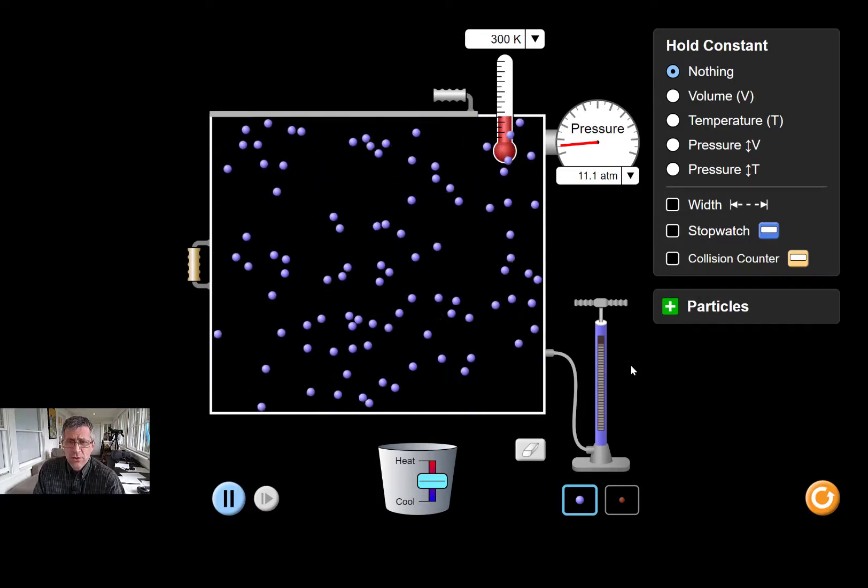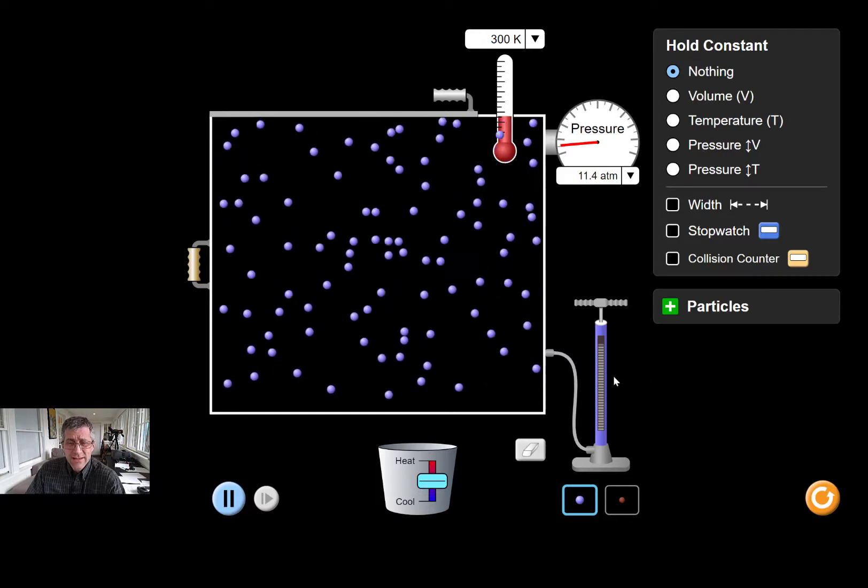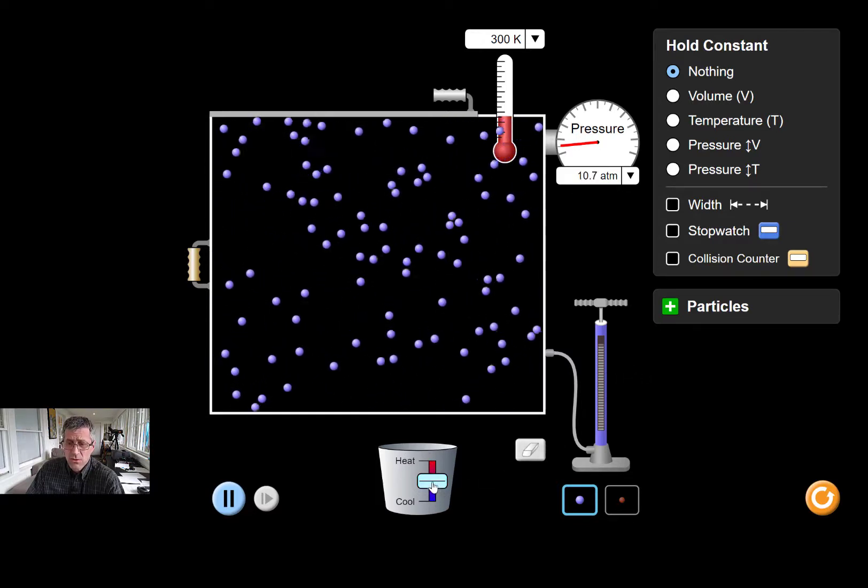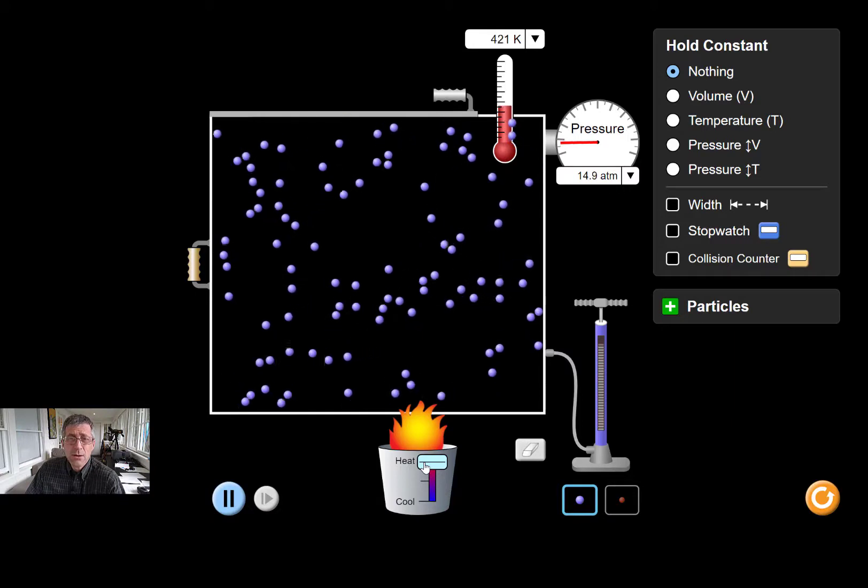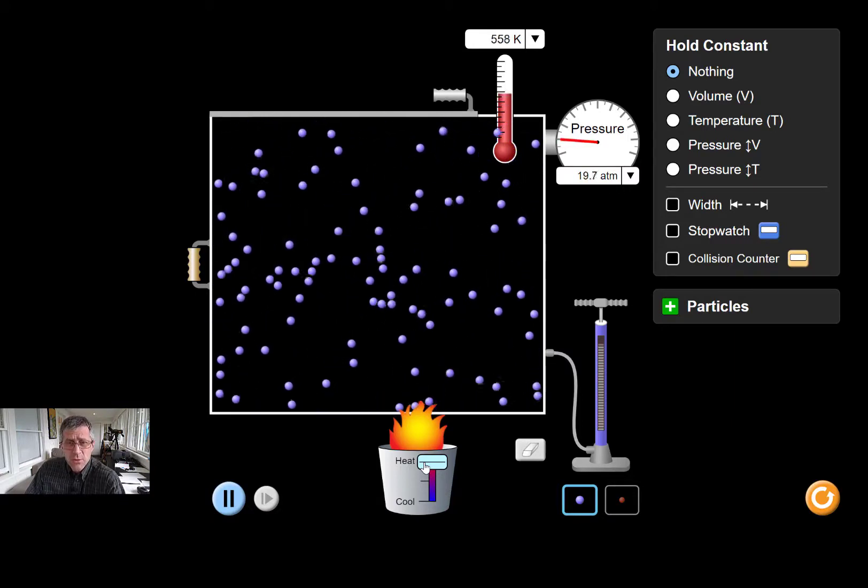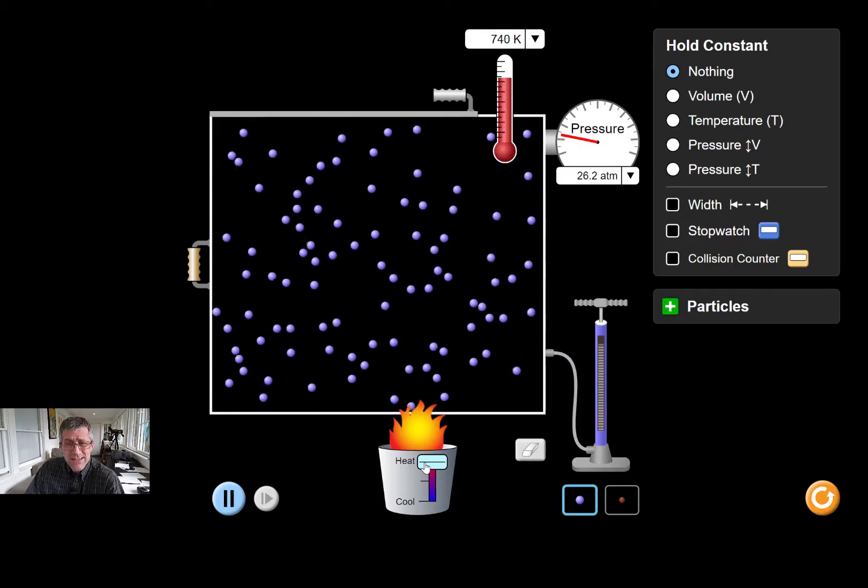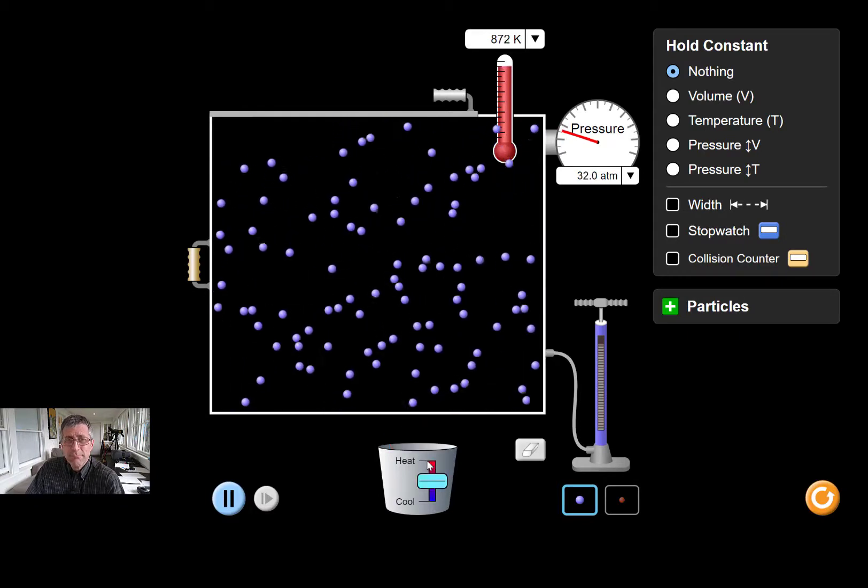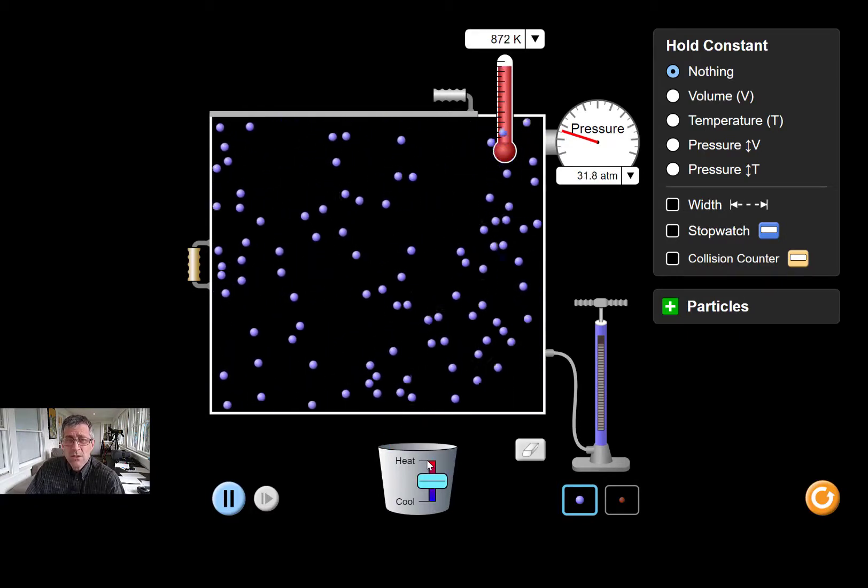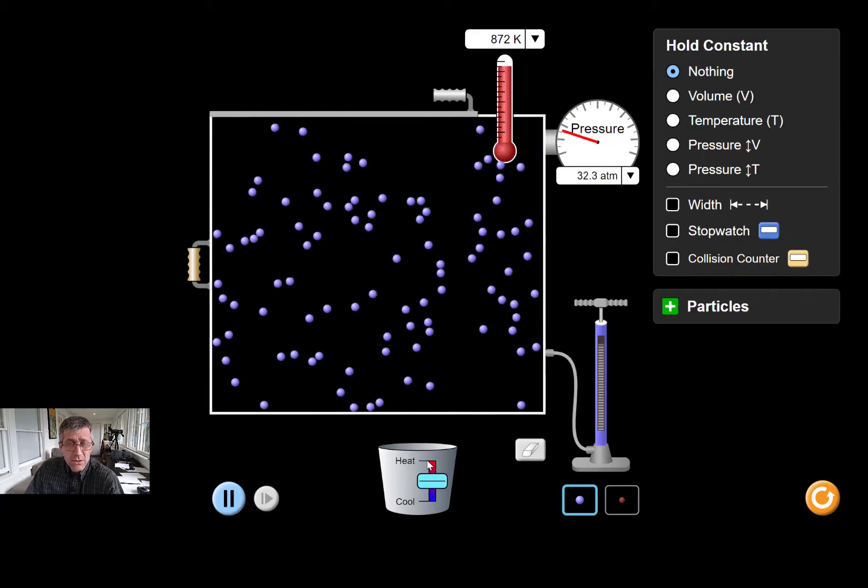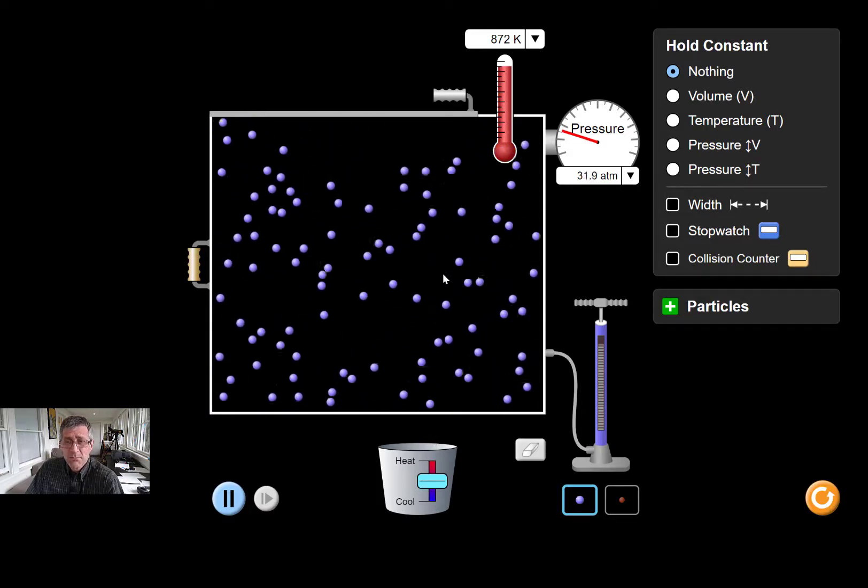The important thing though, is notice that as I heat this, that the motion of these molecules is going to increase, right? And along with the temperature. So it's like the really key part of kinetic molecular theory of gases is saying that temperature and motion are the same thing. So when we measure temperature, what we're really doing is we're measuring how fast these molecules are moving.